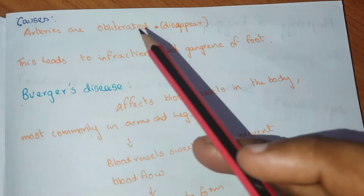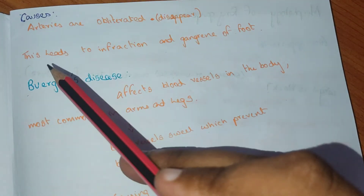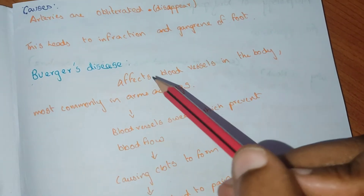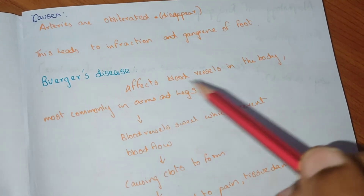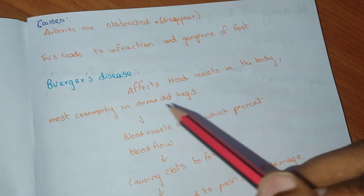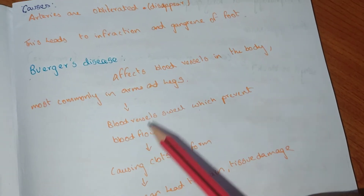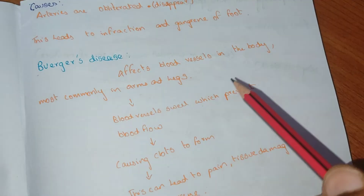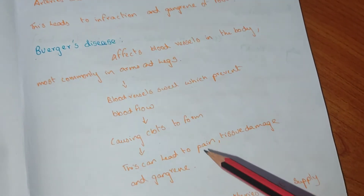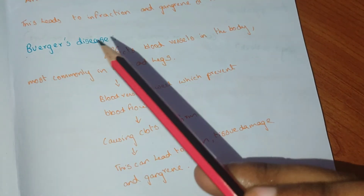The causes of dry gangrene include obliteration of arteries, which leads to infarction and gangrene of the foot. Buerger's disease affects the blood vessels in the body, most commonly in the arms and legs. The blood vessels swell, preventing blood flow, causing clots, pain, tissue damage, and gangrene.